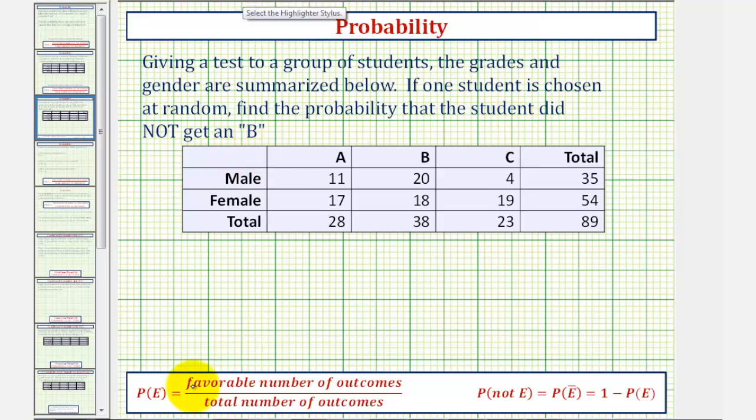Let's first find this probability using the basic probability formula, and then we'll use the formula for the complement of an event.